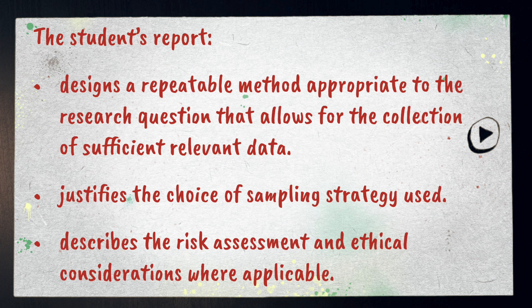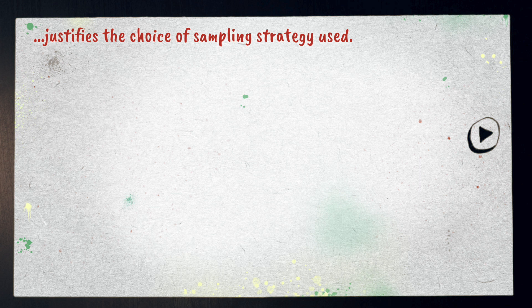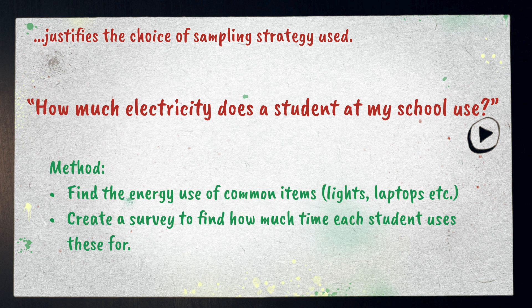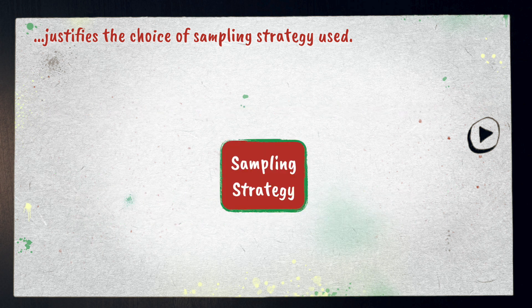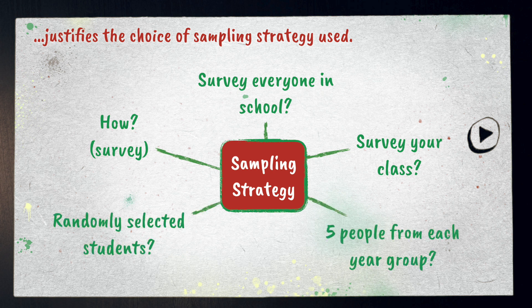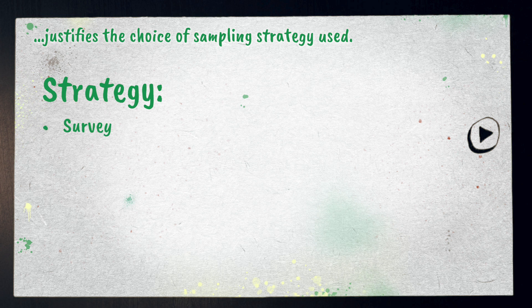In a good assignment, the student's report justifies the choice of sampling strategy used. Let's say part of your assignment involves answering the question: 'How much electricity does a student at my school use?' To find out, you plan to find the energy use of common items like lights and laptops, then create a survey to find out how much time each student uses these for. For your sampling strategy, consider how you'll get the data — you decided to use a survey in this case — and consider who will answer it. Will you survey everyone, survey just your class? Are the students randomly selected? Will you choose five people per year group?